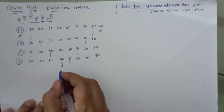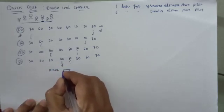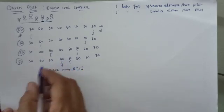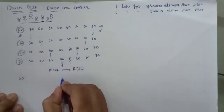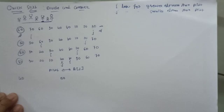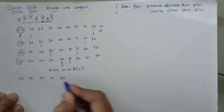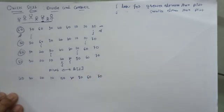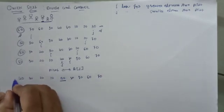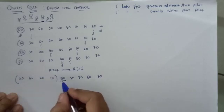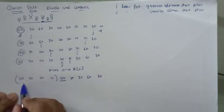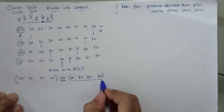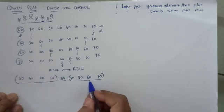Since i has crossed j, we exchange the pivot with a[j]. j is pointing to 40, so 40 comes to the pivot's position and 50 takes the place of 40. The elements 30, 20, 10 remain as they are, and 80, 90, 60, 70 remain as they are. Now you can see that all elements to the left of 50 are smaller than 50 — they may not be in sorted order yet — and all elements to the right are greater than 50.